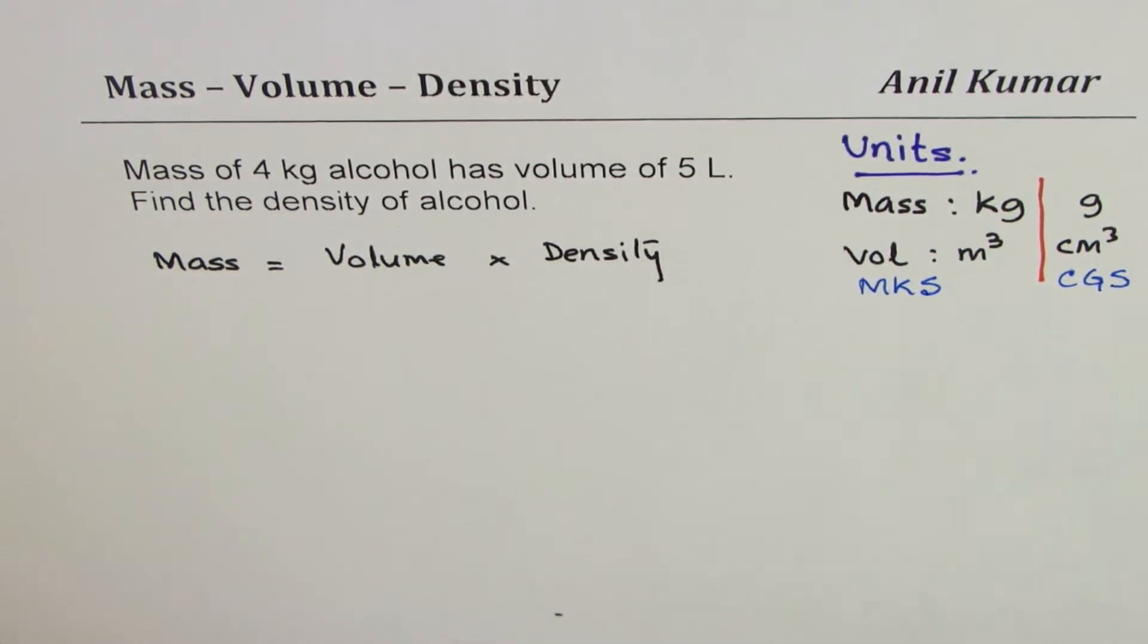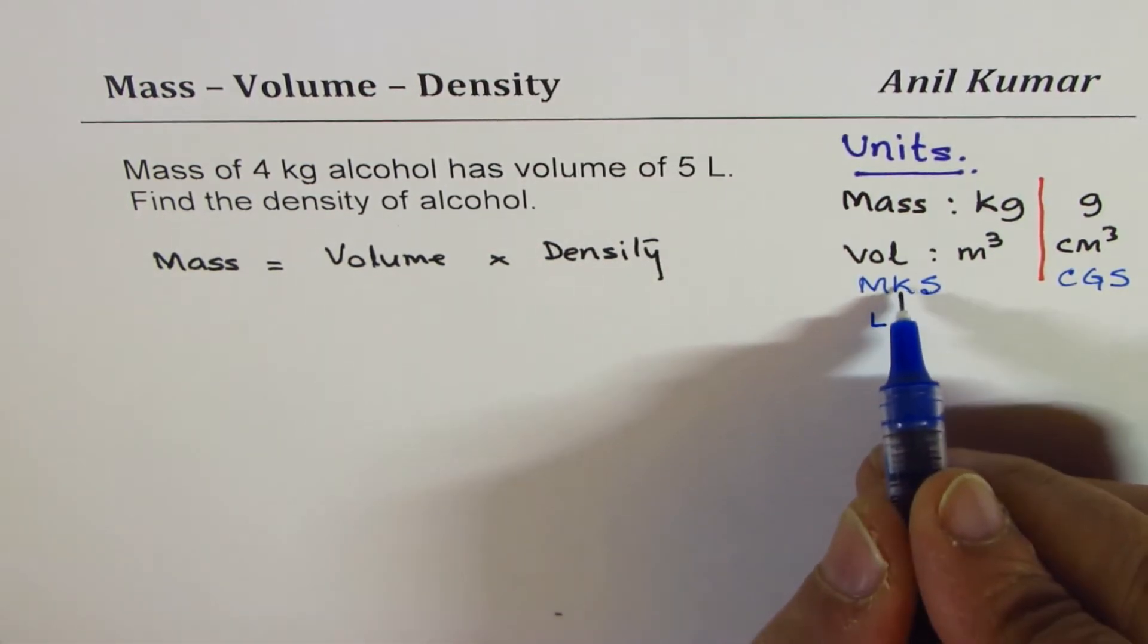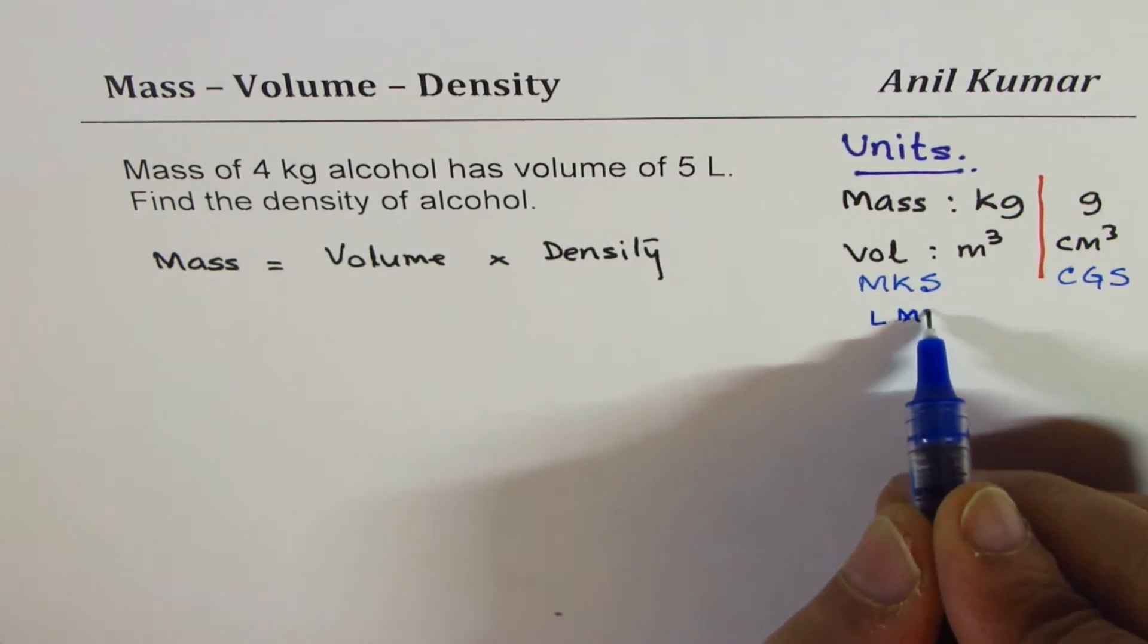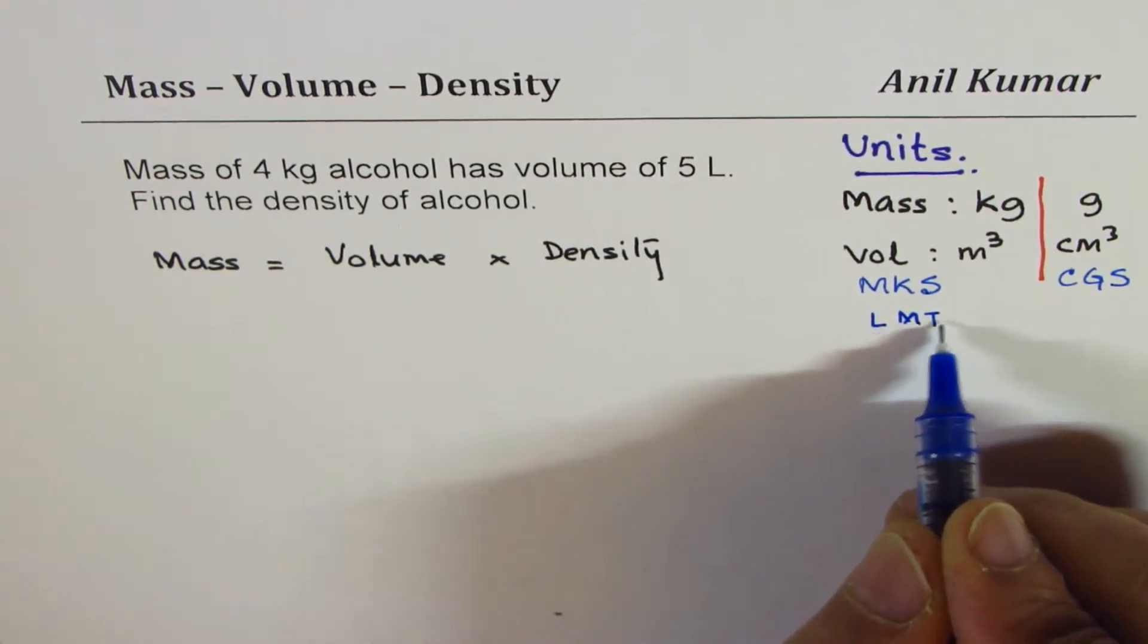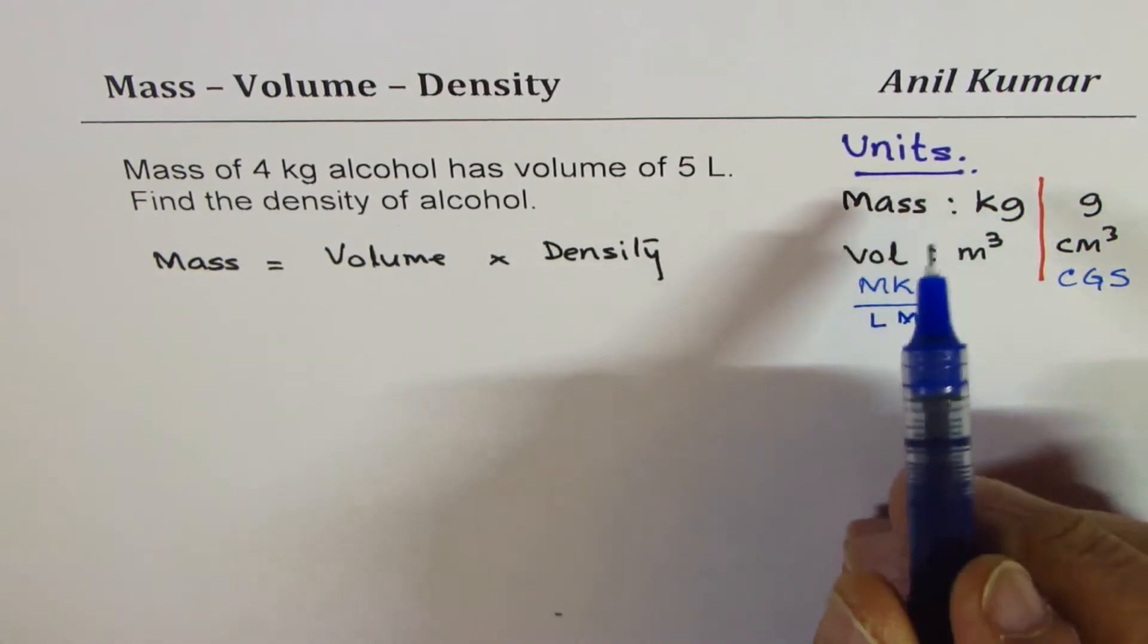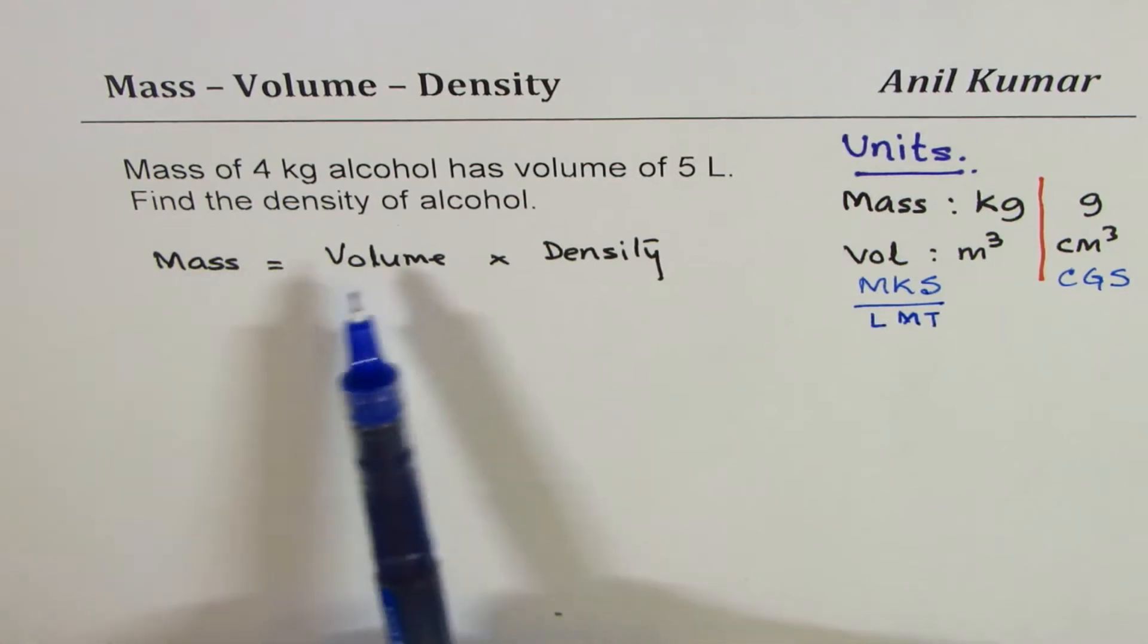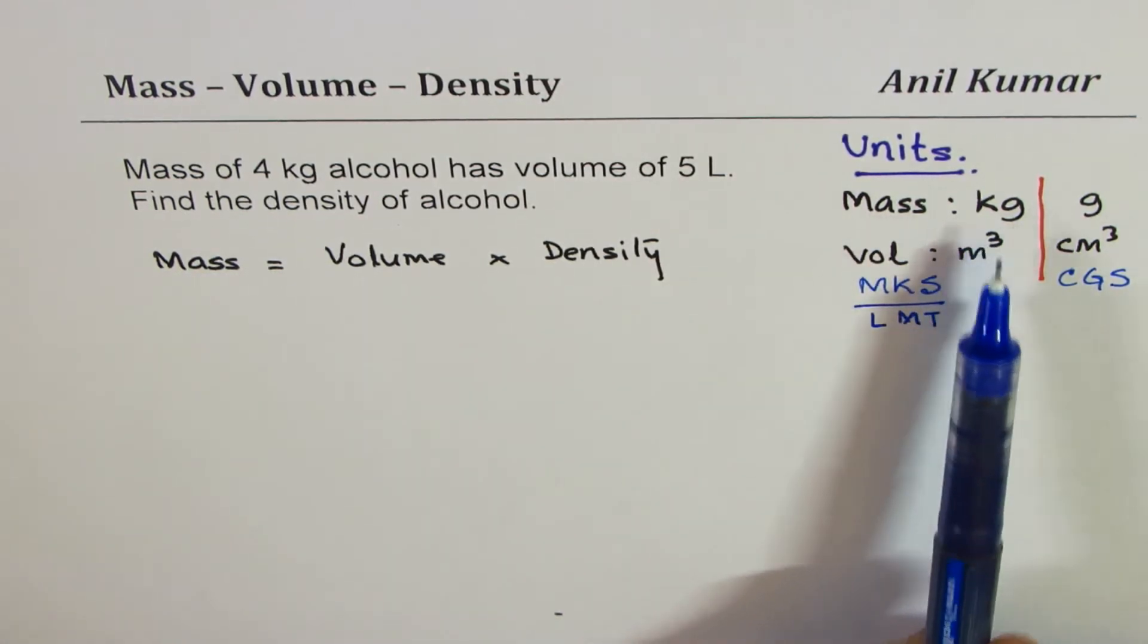These are the units for length—meters, mass—kilograms, and time. So length, mass and time. Now following those set of units, if you want to find density you should have mass and volume in either kilogram meter cube combination or gram centimeter cube combination.